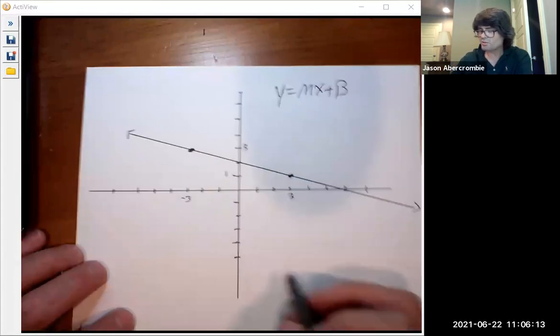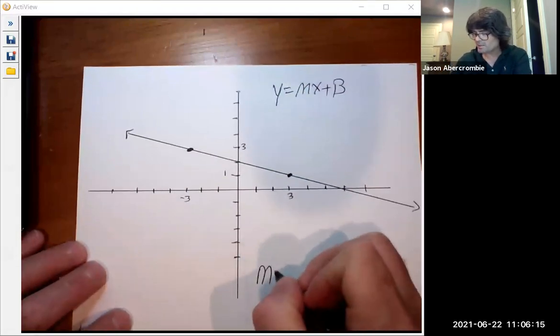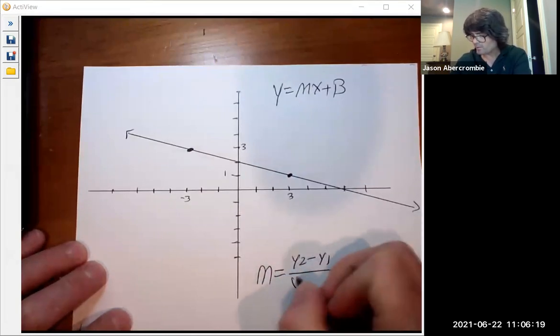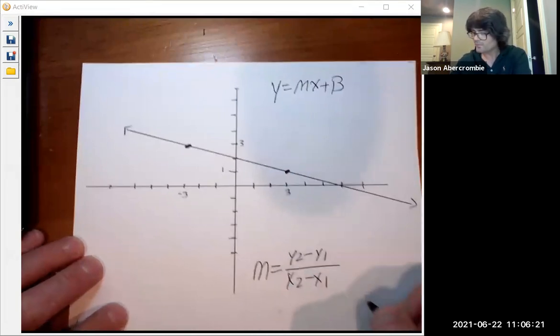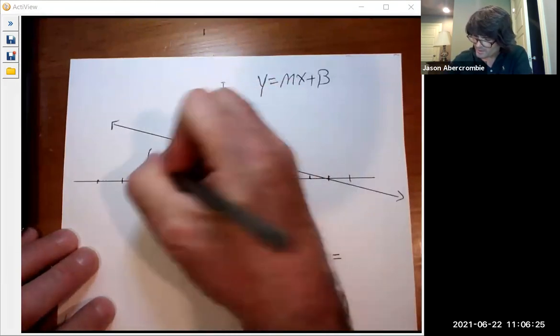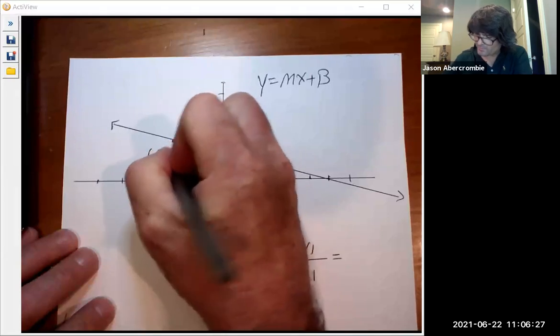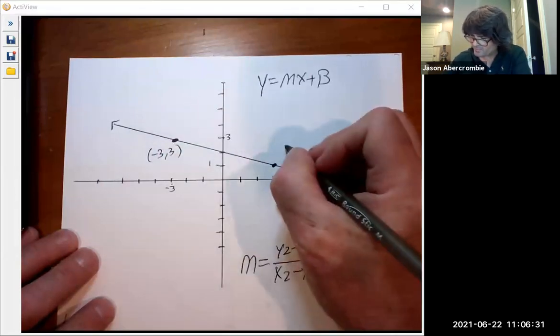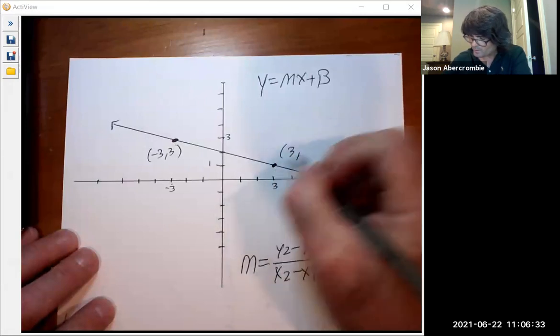Let's find my slope first. I have two points, so my slope is going to be y₂ minus y₁ over x₂ minus x₁. My slope is going to be - and I should label this - negative 3, 3. That's x is negative 3, y is 3. Then x is 3 and y is 1.